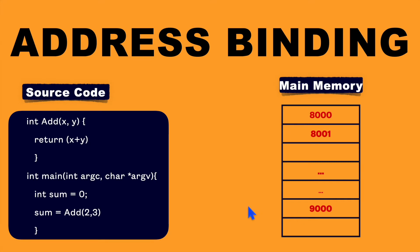What is address binding? Let's say we have source code in our secondary memory and we want to execute that source code.